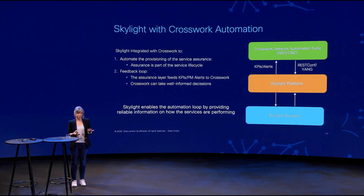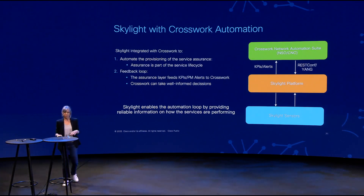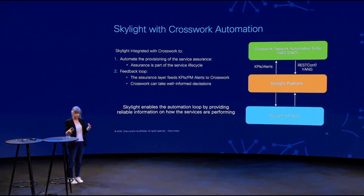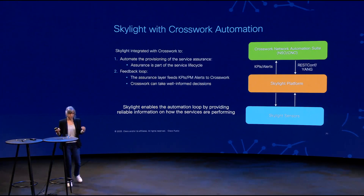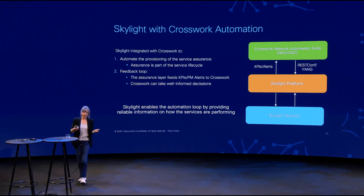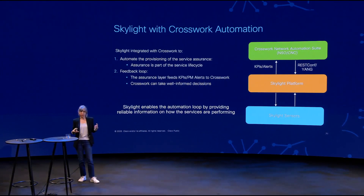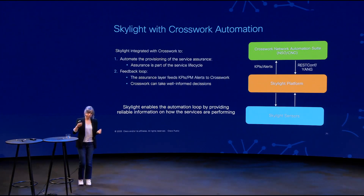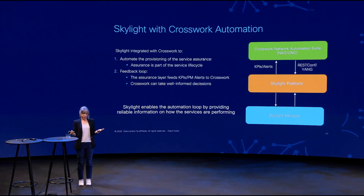That's an important part of the solution — when you create a new service, in the past the service was created and then handed over to a different team to create the assurance, and there was a gap. Now we can do that immediately: at the same time we create the service, we add the assurance. It could be with NSO or with CNC, and then assurance is part of the service lifecycle. On top of that, we can enable automation capabilities — we provide information on how services are performing, feed alerts and KPIs to the orchestrator so it can take the right decisions.